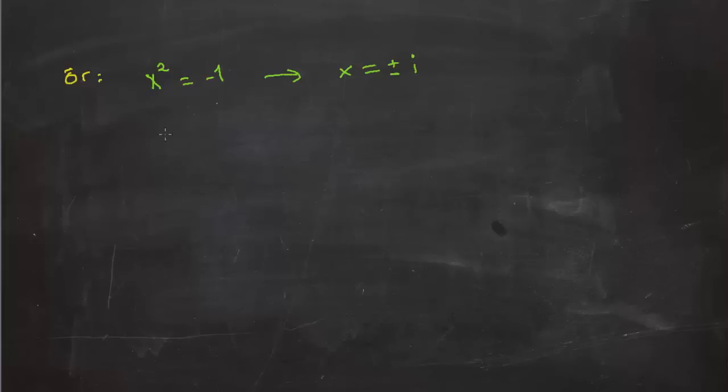Yine benzer şekilde aslında biz şunu da yapabiliriz: x² = -2 de olabilirdi. Bu durumda da x = ±√2·i şeklinde olacaktı.